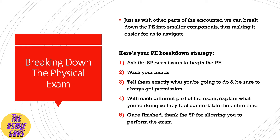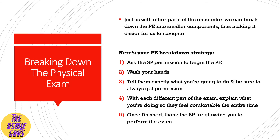We can break the physical exam into smaller components, just like we did the history. Here's a simple physical exam breakdown strategy. Step one: ask permission to begin the physical exam, as soon as you're done with the history component. Then get up and wash your hands. During handwashing, have a couple of questions ready to ask the SP to build rapport. Then when you're about to begin, tell them exactly what you're going to do and always get permission. With each different part of the exam, explain what you're doing so they feel comfortable — for example: 'I'm just listening to your heart to see if there's any issue' or 'I'm going to examine your abdomen for any pain or changes in bowel sounds.'